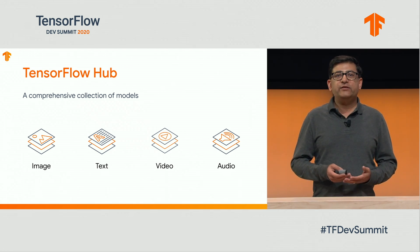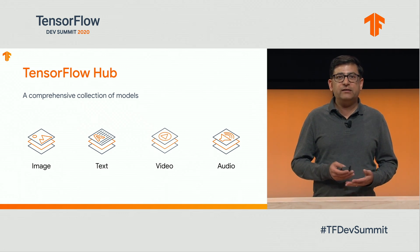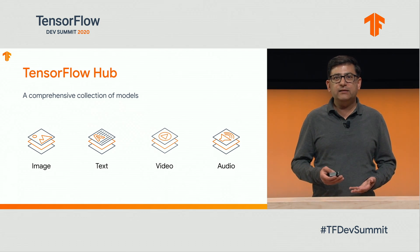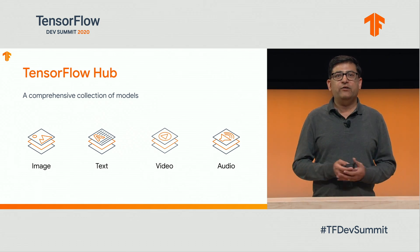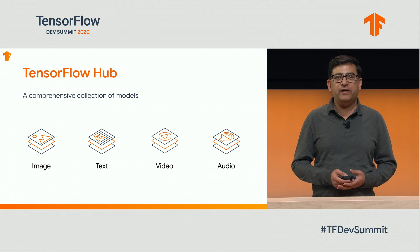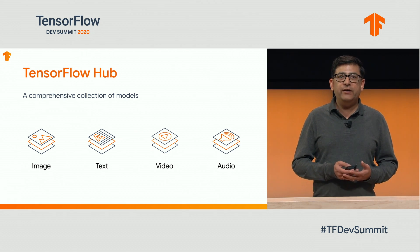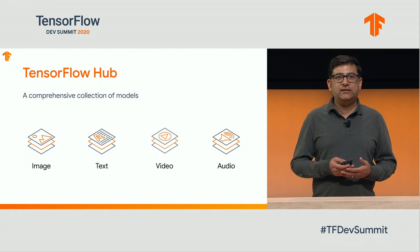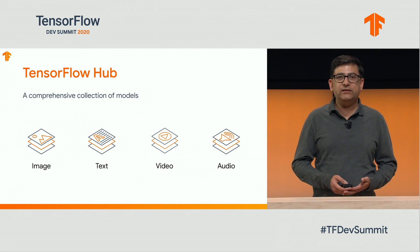For text, we have state-of-the-art models like BERT and ALBERT. We have universal sentence encoders and many more embeddings that can support a wide range of natural language understanding tasks, such as question and answering, text classification, semantic analysis, and many more. We also have video-related models which can help with video action recognition, such as gestures, and also video generation.